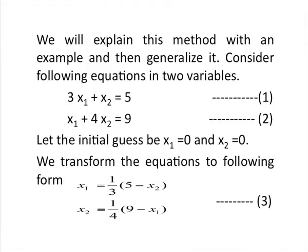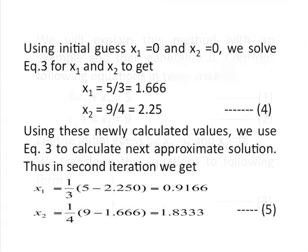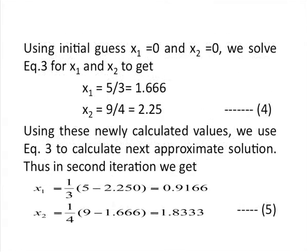Similarly, using equation 2, we will have the value of x2 on the left-hand side, and on the right-hand side we will have the x1 variable as well as coefficients. Using equation 3, we can find out the next approximate solution. So using the initial guess x1 = 0 and x2 = 0 in equation 3, in the next approximation we get the values of x1 and x2 as given by equation 4. These newly calculated values can be used as initial values for the next iteration, as we do in all iterative methods, and we use equation 3 to find the next approximate values given by equation 5.